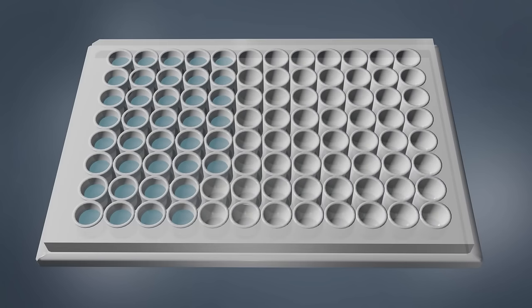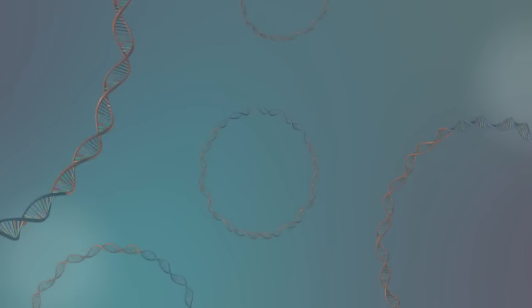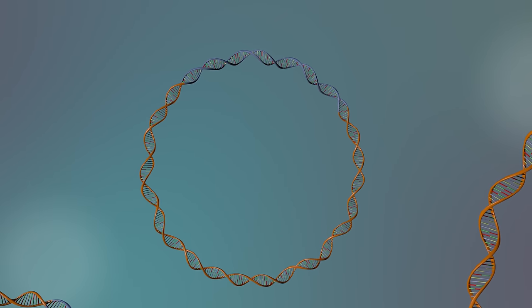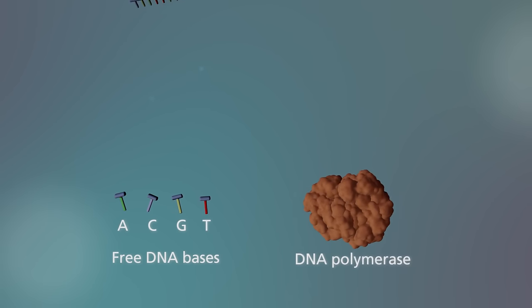The isolated DNA is transferred to a plate where the sequencing reaction will take place. A mixture of ingredients is added. These include free DNA bases A, C, G, T, DNA polymerase enzyme, and DNA primers.